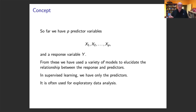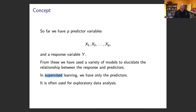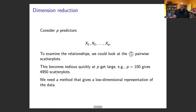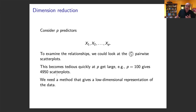In unsupervised learning we will only have the predictors, and what we're trying to do is find some relationship between these predictors. The first one we're going to look at is Principal Component Analysis, or PCA. We've got P predictors X1 up to XP, and if you think about it, you could look at scatterplots — take two at a time — but that gets really big really quickly. For example, if you want to choose two at a time there would be P-choose-two pairwise scatterplots.